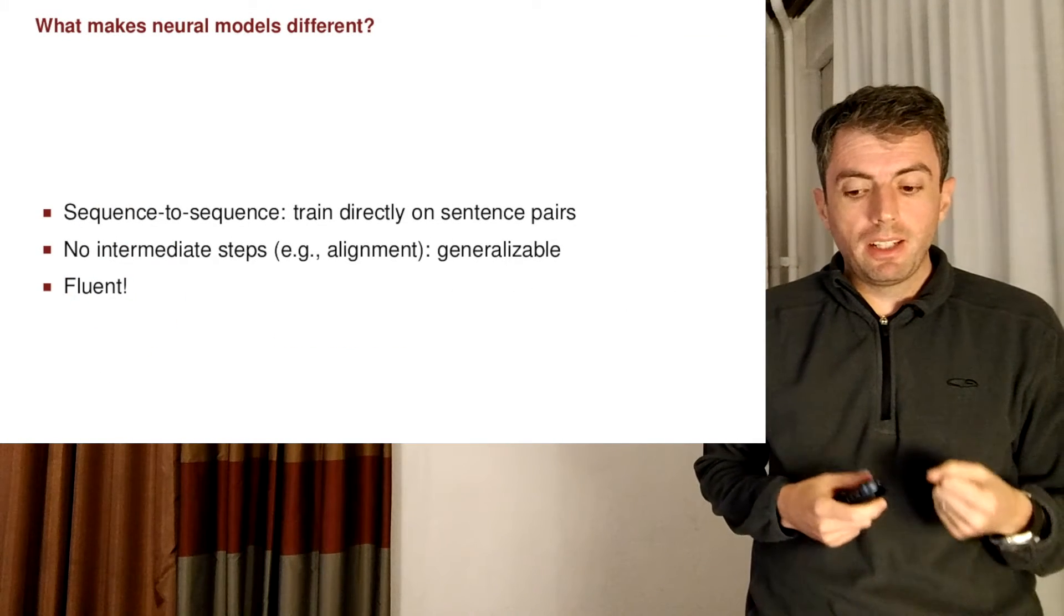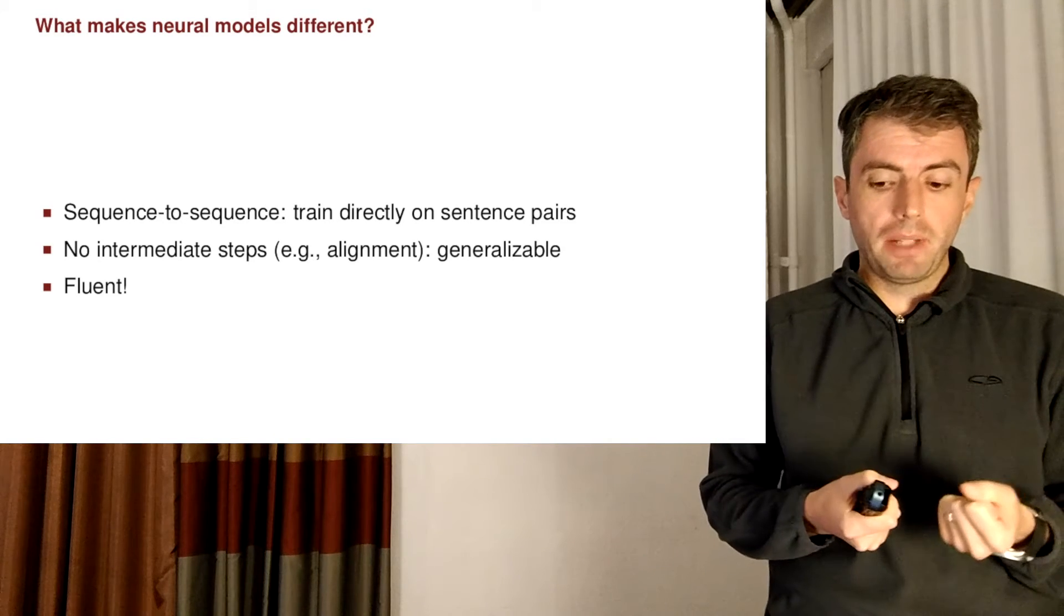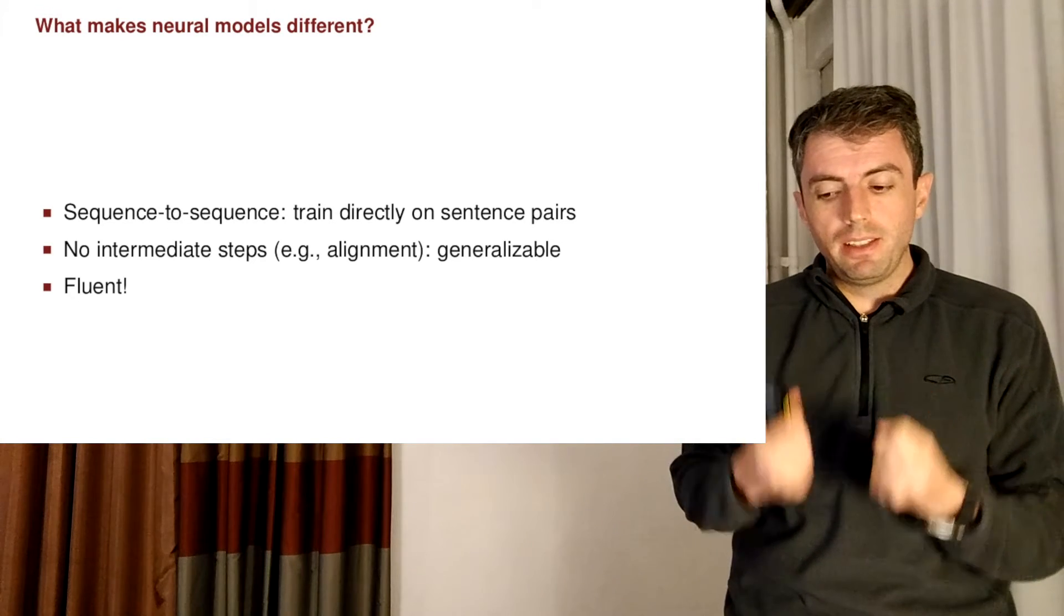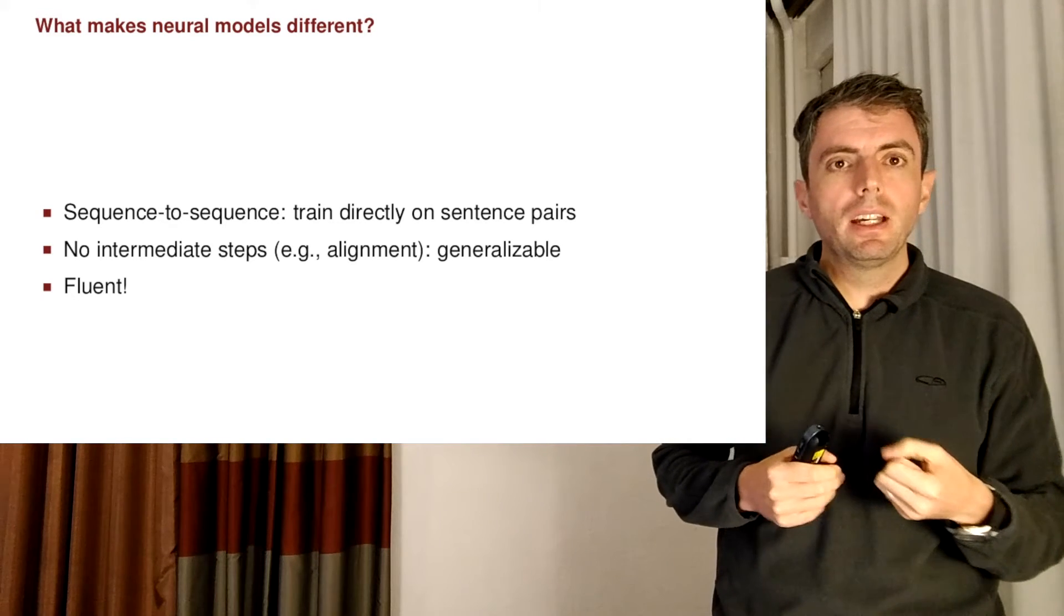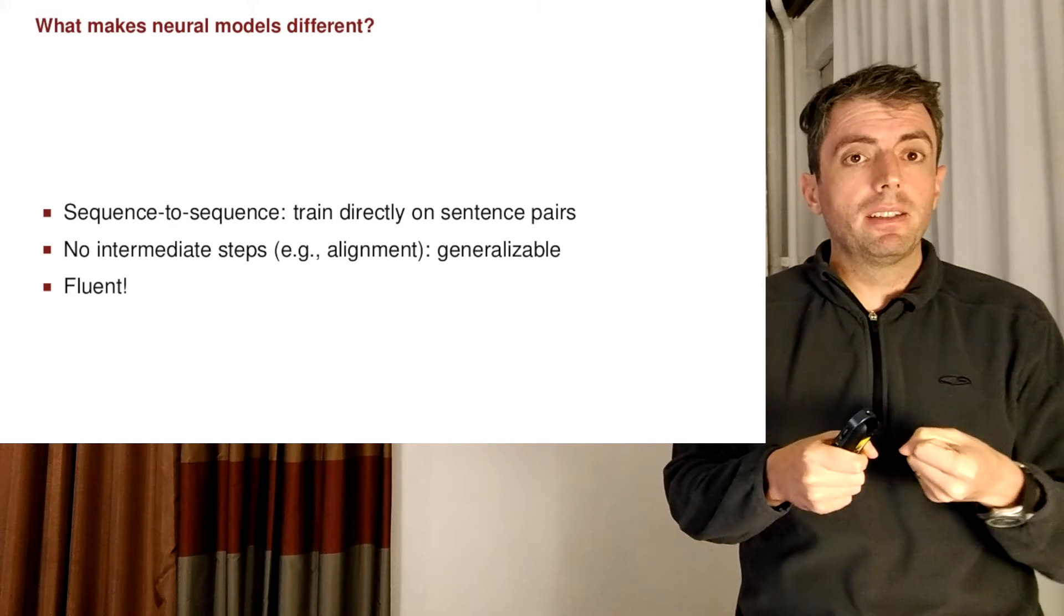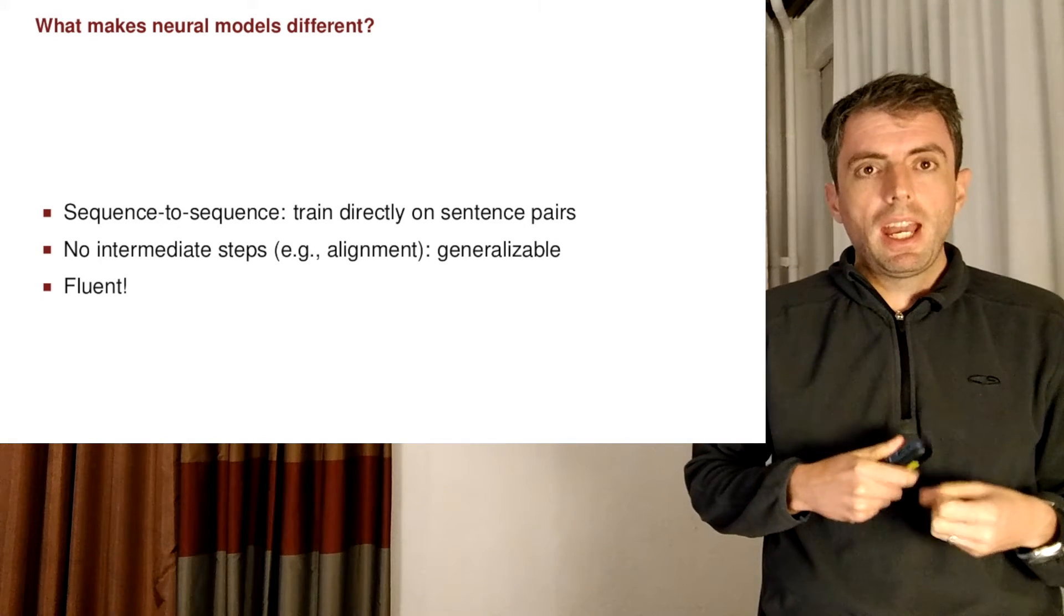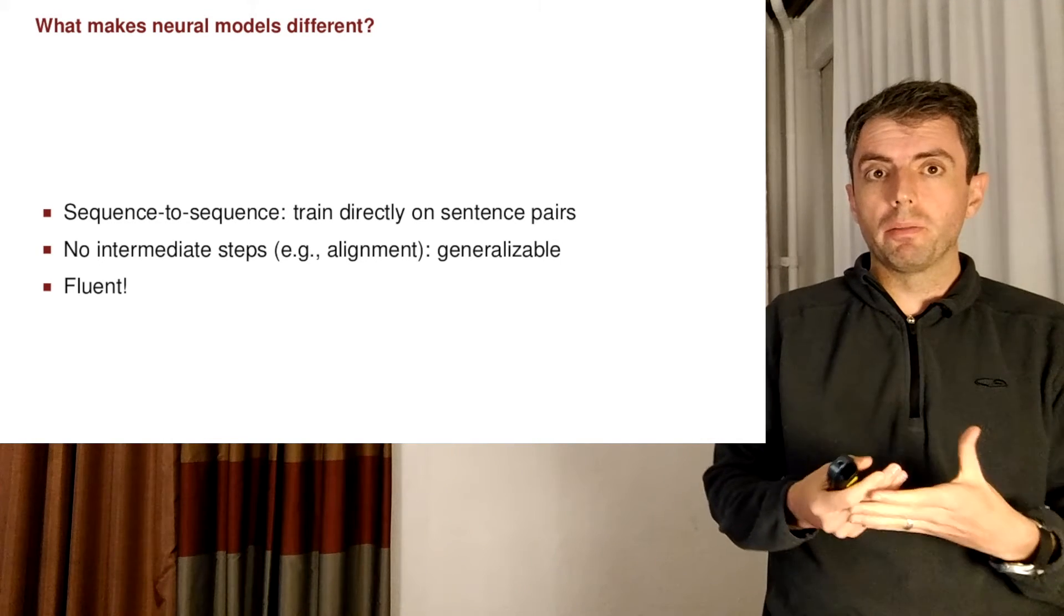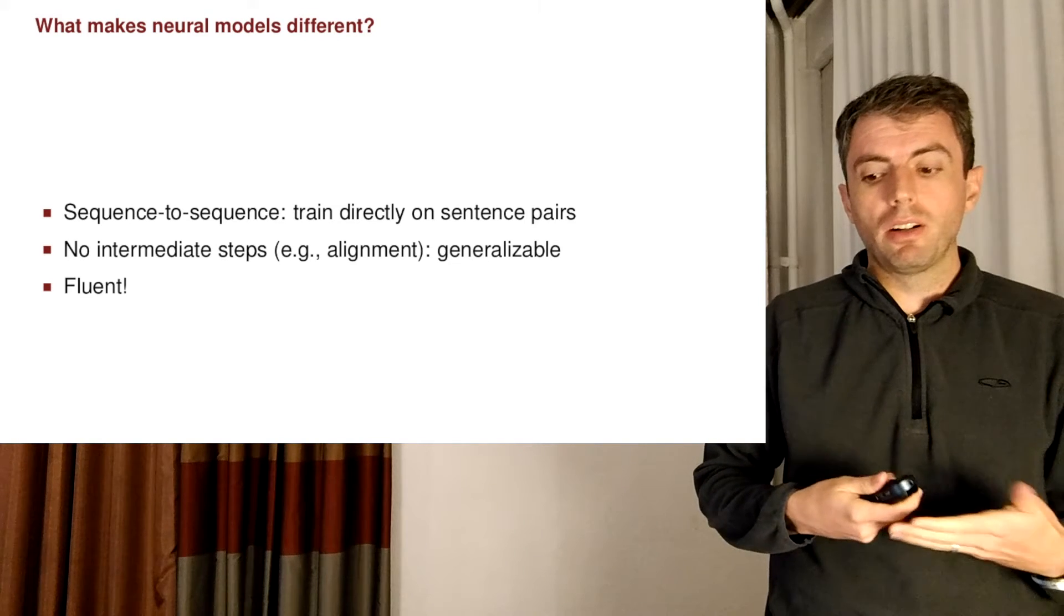Neural machine translation has some advantages compared to phrase-based machine translation. The first is that you can train directly on the sentence pairs. This is often called a sequence-to-sequence task. We're going directly from sentences in the source language to sentences in the target language. A lot of the intermediate modeling steps that we had for our other machine translation models, like alignments and discovering the phrases, are gone.